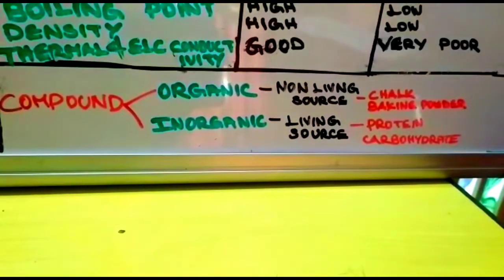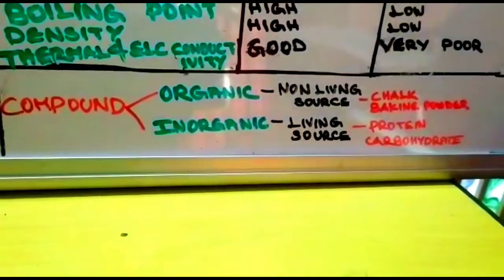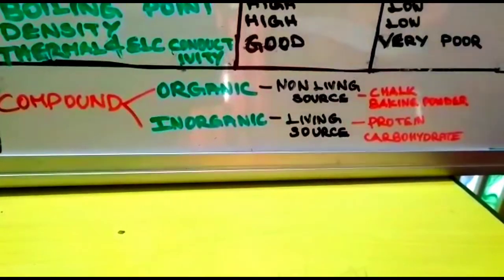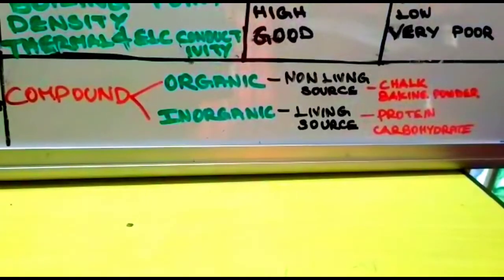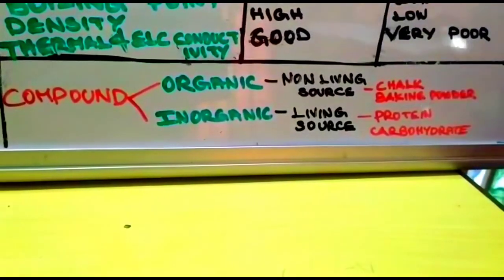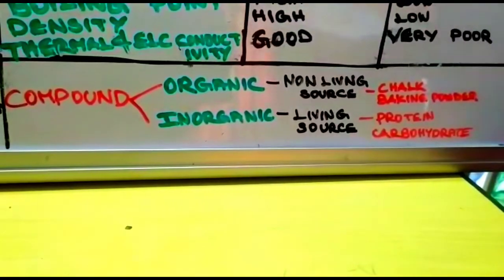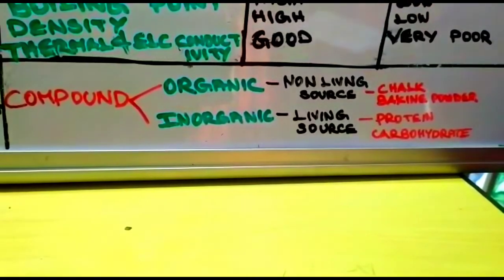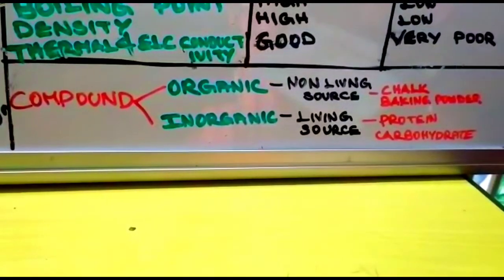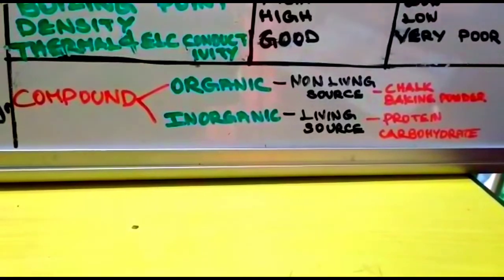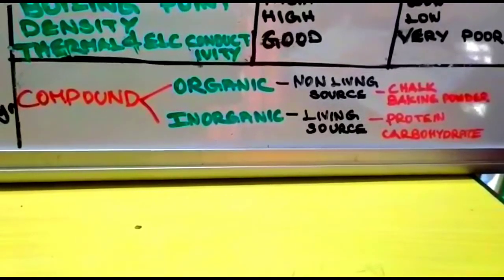Compounds are in solid, liquid, or gaseous state. Examples of compounds in solid state: sand or silica has silicon and oxygen. In liquid state, water has hydrogen and oxygen. Acetic acid, or vinegar, has carbon, hydrogen, and oxygen. In gaseous form, carbon dioxide and carbon monoxide, which is a pollutant, have carbon and oxygen.